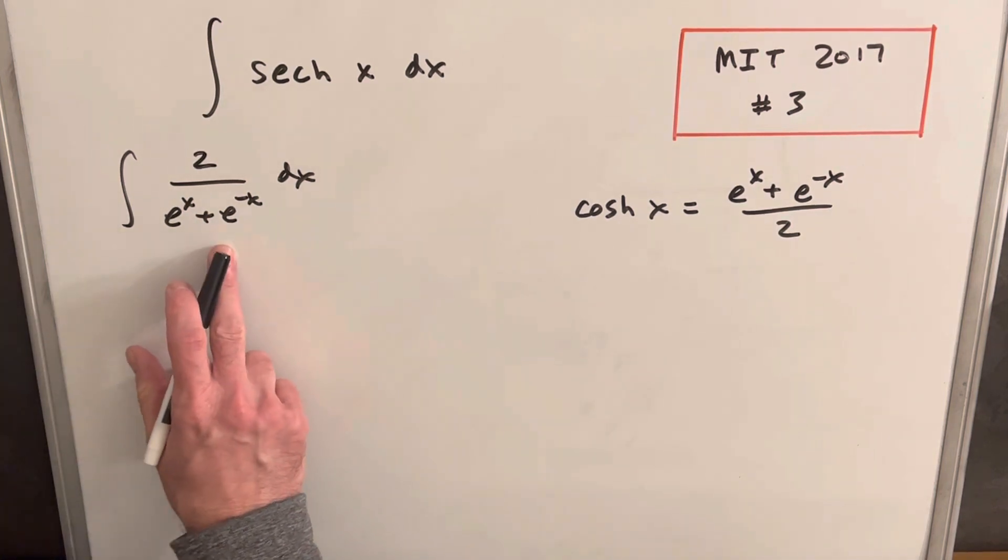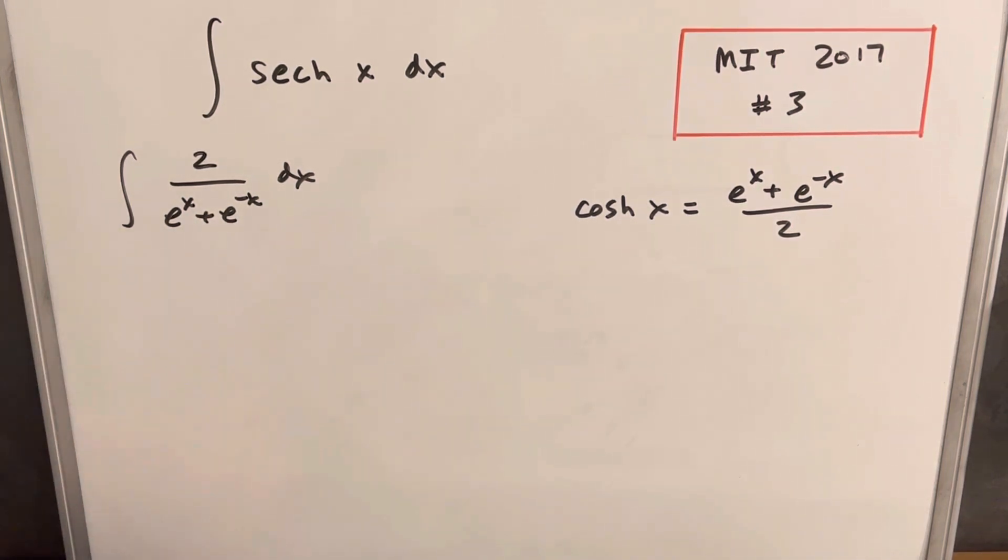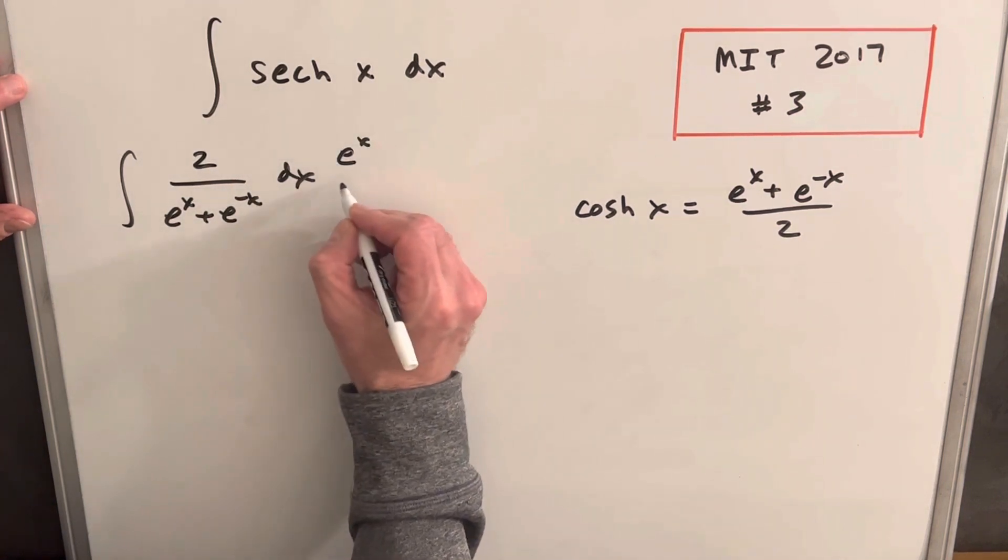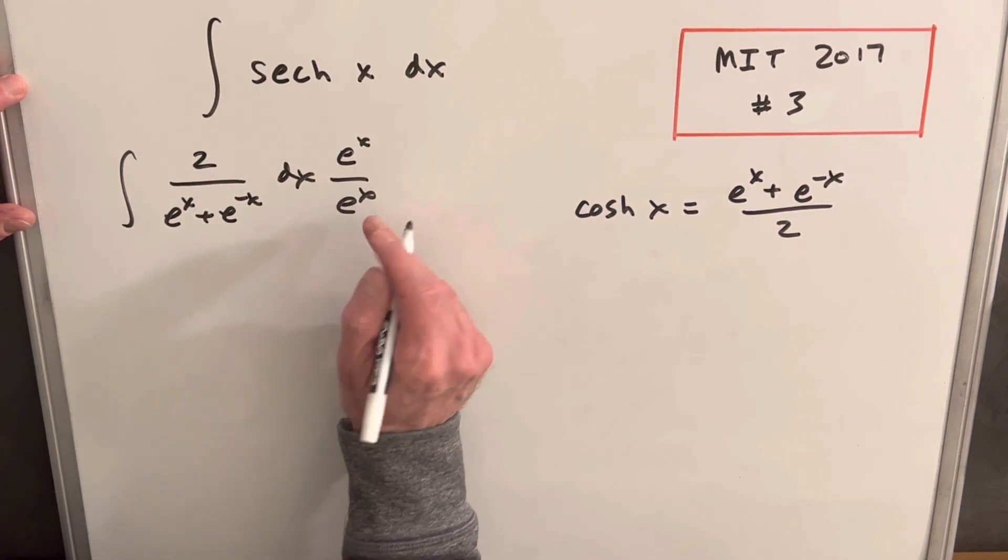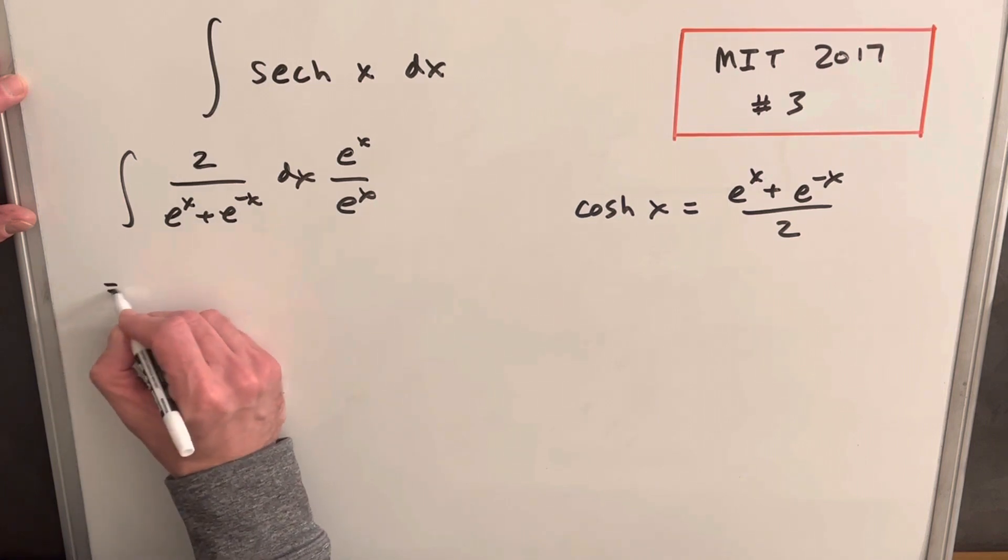What I like to do whenever I get this situation where I have two exponentials in the denominator, I'll just multiply my numerator and denominator by e to the x. This seems to help quite a bit.